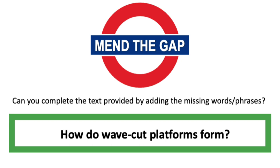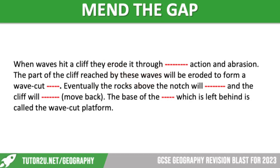We're going to do it again. This time the text is explaining how wave cut platforms form, and we are again looking for the missing words or phrases. The text reads: 'When waves hit a cliff, they erode it through [something] action and abrasion. The part of the cliff reached by these waves will be eroded to form a wave cut [something]. Eventually, the rocks above the notch will [something] and the cliff will move back. The base of the [something] which is left behind is called the wave cut platform.' Pause the video if you need more time.